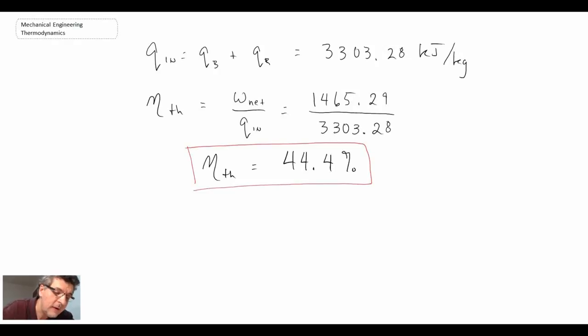So you can see the thermal efficiency is quite a bit higher than we saw for the simple Rankine. And that's because we've been increasing the efficiency by doing both the reheat as well as the regeneration. And essentially, that's increasing the area under the curve that we talked about, increasing the efficiency for Rankine would result in those improvements. And that's what we're seeing here with the higher thermal efficiency.